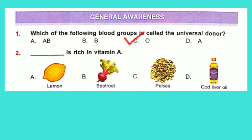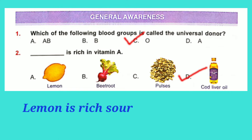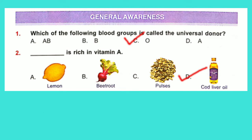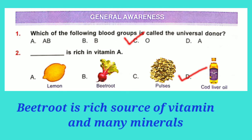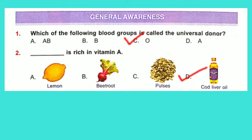Question No. 2: Dash is rich in Vitamin A. Option D is correct: Cod liver oil. Option A, Lemon, is a rich source of Vitamin C. Beetroot is a rich source of Vitamin B9 and many minerals. Pulses are a rich source of protein.